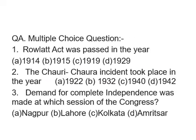Today's Homework Assignment — Multiple Choice Questions. Number 1: The Rowlatt Act was passed in the year — 1914, 1915, 1919, or 1929? Number 2: The Chauri Chaura Incident took place in the year — 1922, 1932, 1940, or 1942?